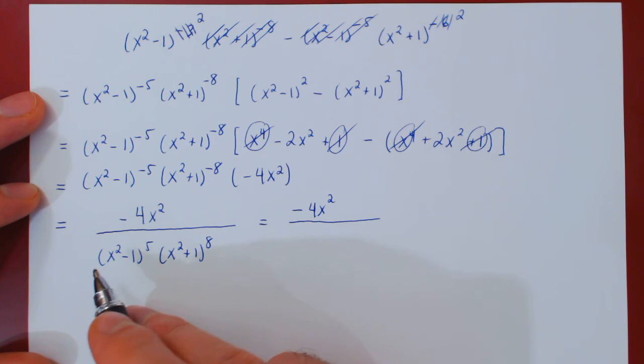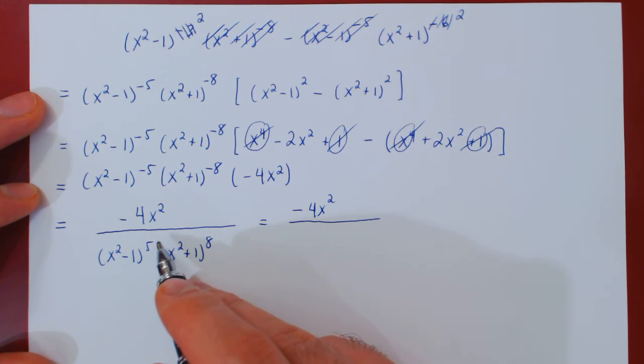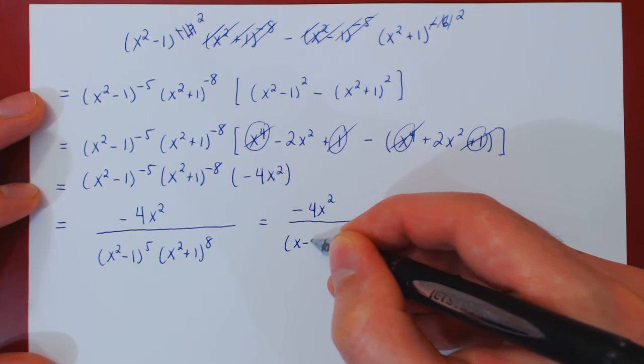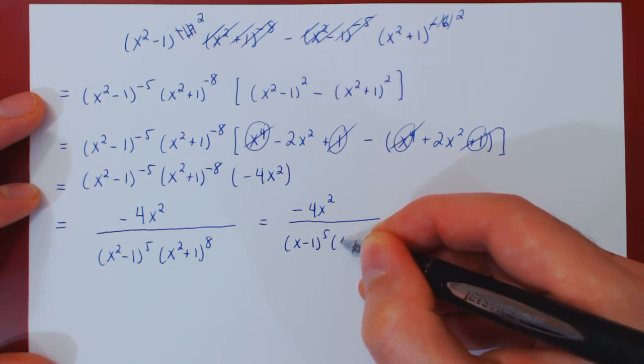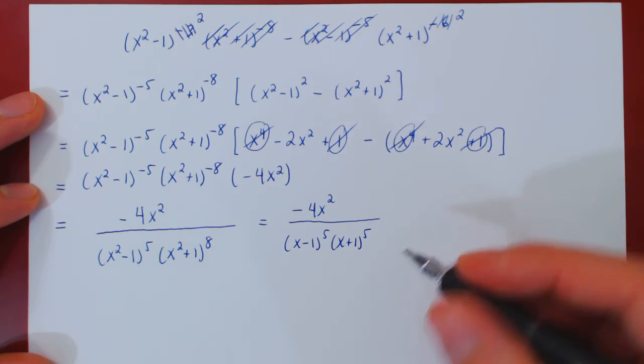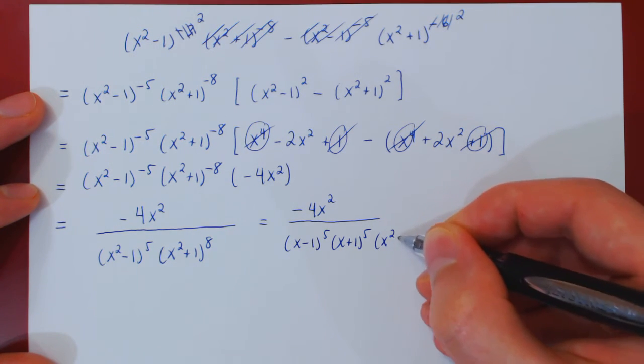And notice that the whole thing is under the power of 5. So when we factor this as x minus 1, x plus 1, the whole thing is to the 5th power. So we can distribute. So we'll have x minus 1 to the 5 times x plus 1 to the 5. And the leftover term x squared plus 1 to the 8.